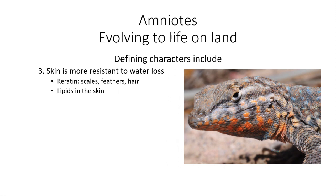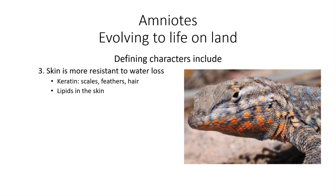A third characteristic: the skin of amniotes is way more resistant to water loss. Think about a lizard — this is a side-blotched lizard, covered in scales. Scales are made up of keratin, much like your fingernails, and this prevents water loss. In mammals, we have lipids in the skin and also keratin. All of these things prevent water loss. A poor frog put out in the sun or somewhere dry is going to dry out really quickly. Whereas in desert environments like here in New Mexico, lizards are abundant.